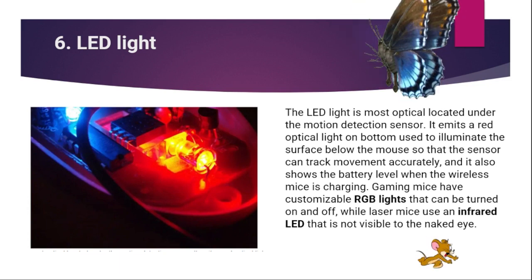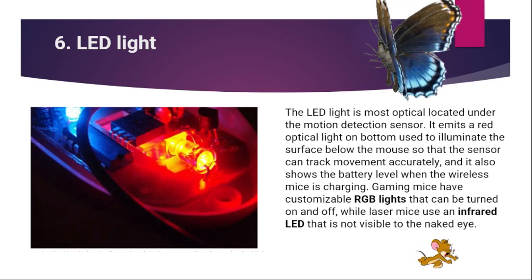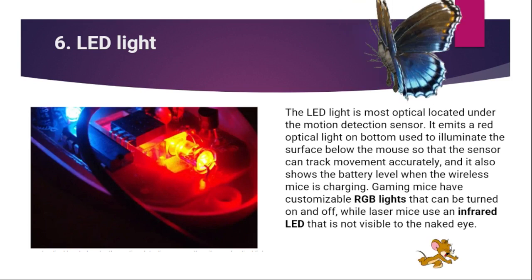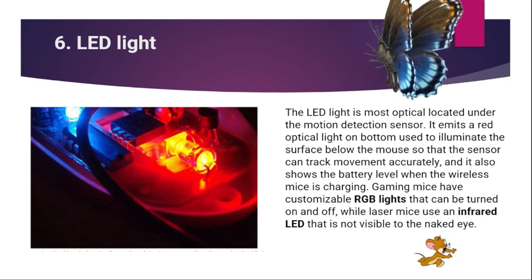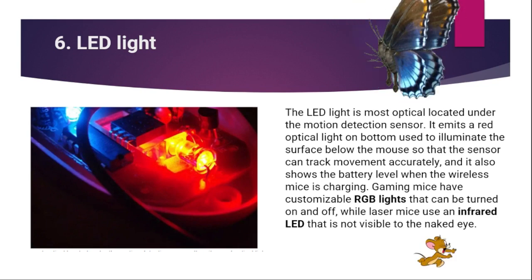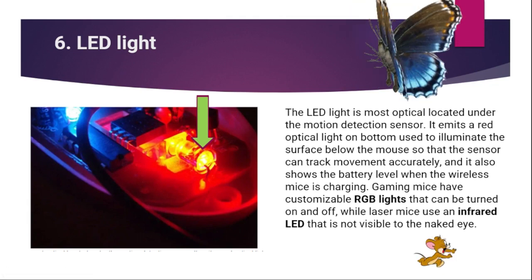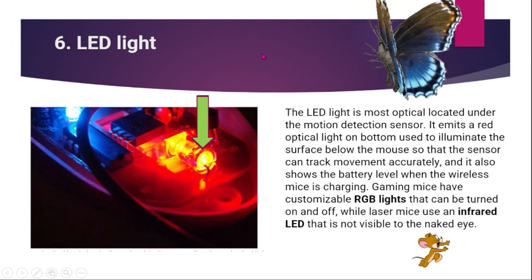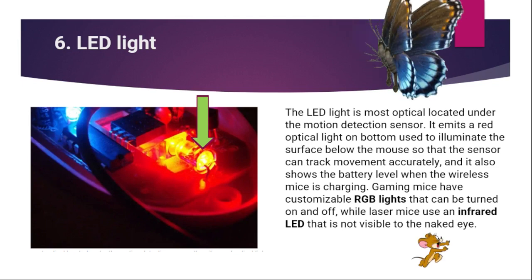Next, LED light. LED light is most optical, located under the motion detection sensor. It emits a red optical light used to illuminate the surface below the mouse so that the sensor can track movement accurately. It also shows the battery level when the wireless mouse is charging. Gaming mice have customizable RGB lights that can be turned on and off, while laser mice use an infrared LED that is not visible to the naked eye. Dati, yung mga old mouse, wala pa siyang LED light — meron siyang parang bola sa ilalim.